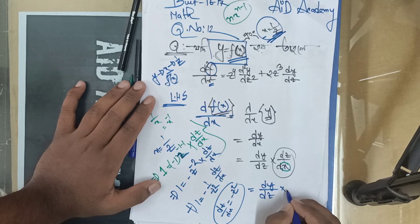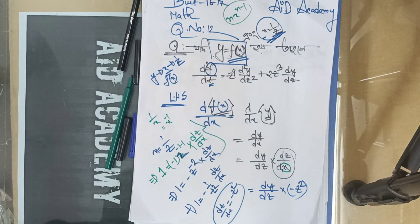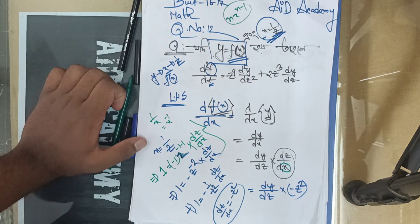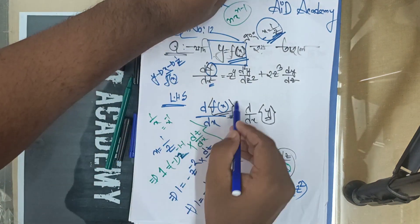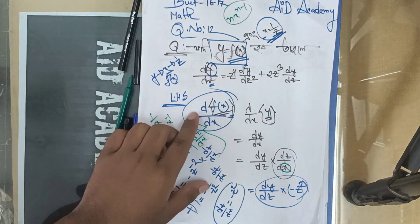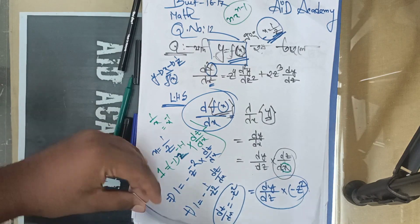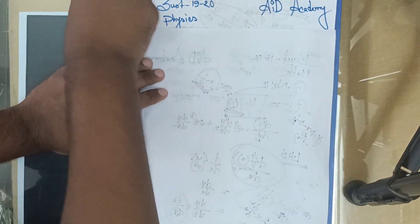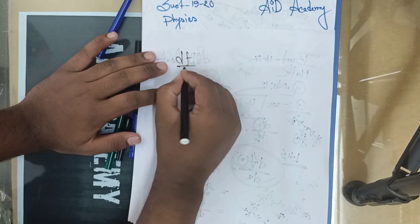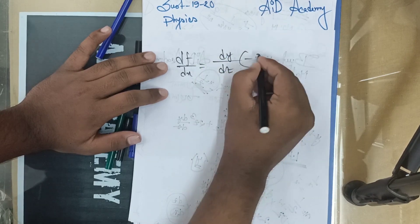dy by dz into minus z squared. dz by dx is minus z squared. The function is called implicit differentiation. d of f of x divided by dx is minus z squared. We have to write a function: x is minus z squared.